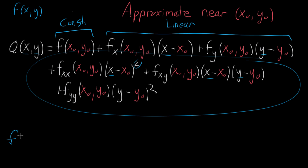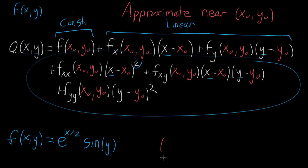So let's say we're looking at the function f of x, y equal to e to the x divided by two, multiplied by sine of y. This is our multivariable function. We want to approximate this near some point, and I'm going to choose a point we can actually evaluate these at. It would be convenient if x equals zero, and then y equals pi halves, because that's something where I'll know how to evaluate sine and its derivatives.